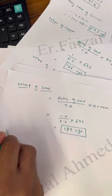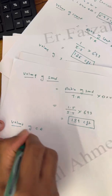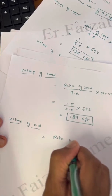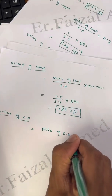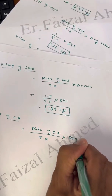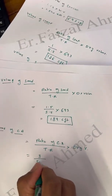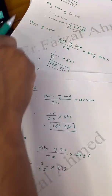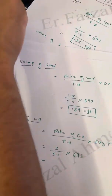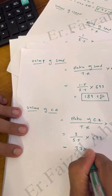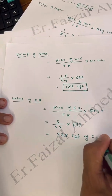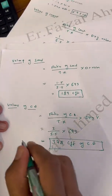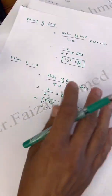Next, volume of coarse aggregate = (coarse aggregate ratio / total ratio) × dry volume. The aggregate ratio is 3, total ratio is 5.5, and dry volume is 693 cft. So 3 × 693 / 5.5 = 378 cft of coarse aggregate required. Thank you, that's all for today — bye bye, see you next time.